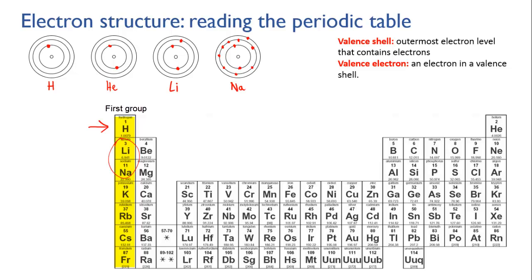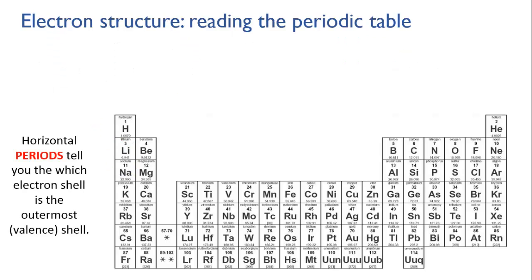The groups show you which elements have the same number of valence electrons in their valence shells. And if you think that's a bit arbitrary, then consider that this small act of classification is the basis of modern chemistry. To summarize, the periods — the horizontal rows — tell you which electron level is the outermost for that atom. For instance, for potassium, the valence shell is the fourth electron level because it's in the fourth period.